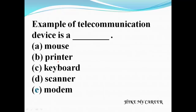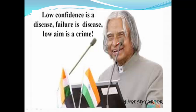Next question: which is an example of a telecommunication device? A: Mouse, B: Printer, C: Keyboard, D: Scanner, E: Modem. Answer is Modem — modem is the example of a telecommunication device; mouse, printer, keyboard, and scanner are input/output devices. These are very important questions from previous year papers. Thank you for watching — please subscribe and share this channel with your friends.